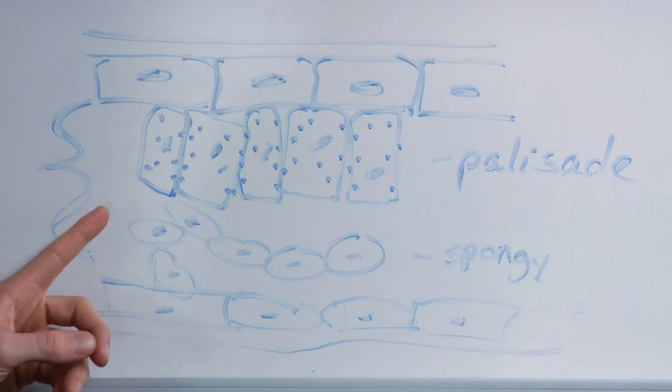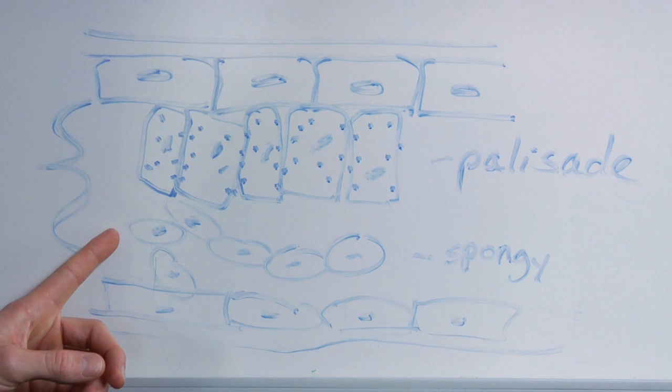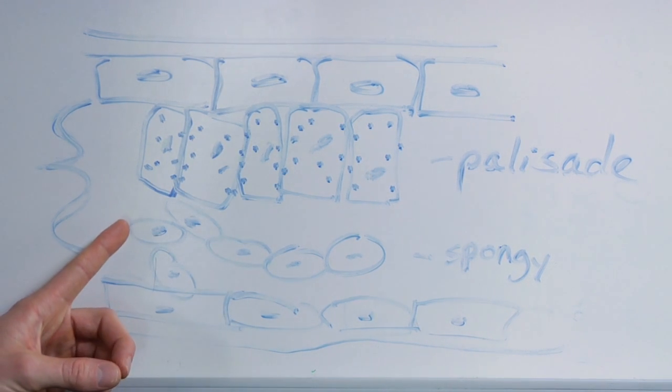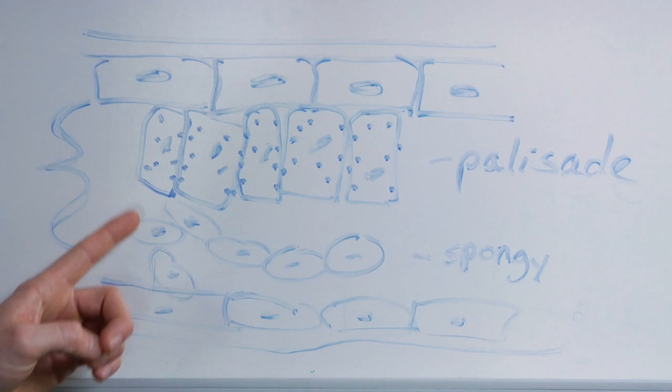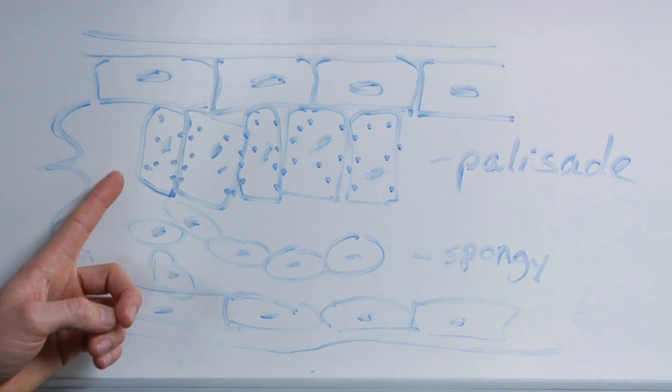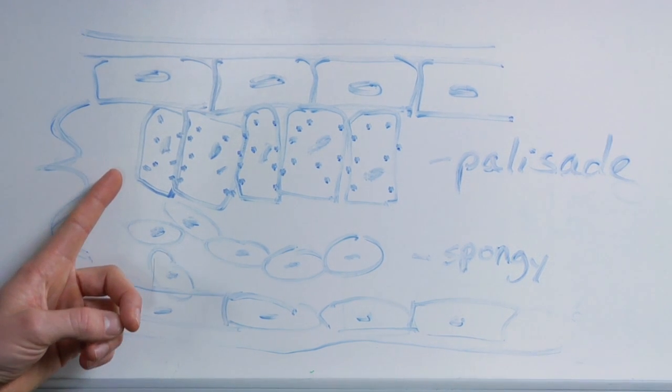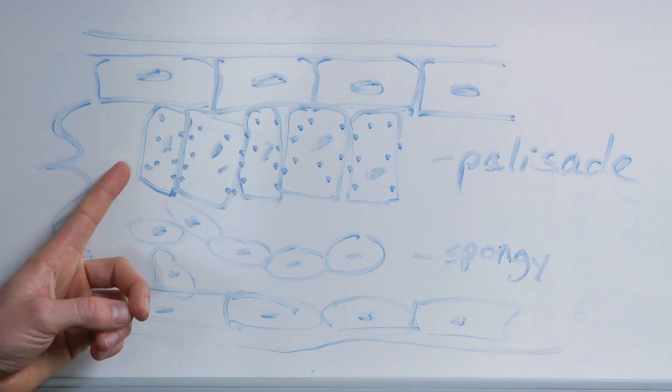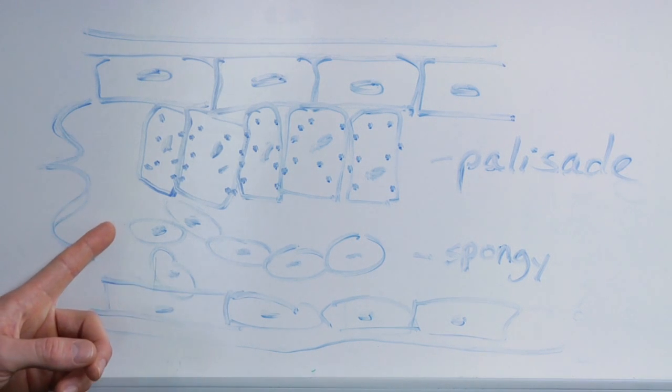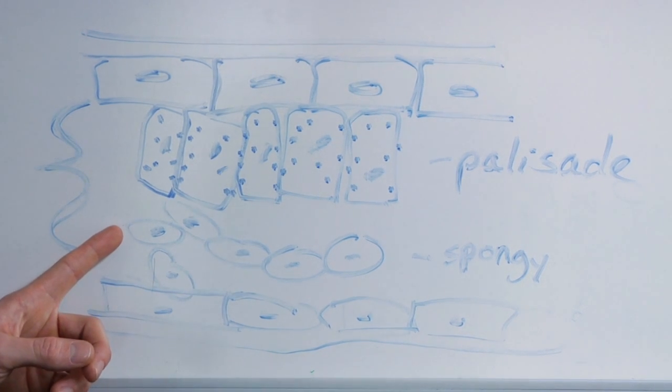Then you have your second layer, the spongy layer. You'll notice that the cells are more rounded, they're not as tightly packed. The reason the palisade layer was so closely packed was to optimize carbon dioxide use. The spongy layer, since there's not as many chloroplasts in it, doesn't really need to be quite as efficient, there's more air space.